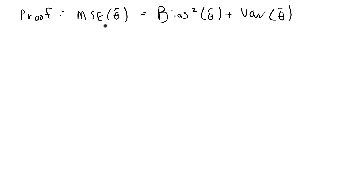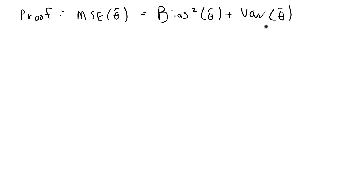The relationship is that the mean square error of an estimator — in this case our estimator is going to be theta hat — is equal to the bias squared plus the variance. I want to prove this using the expectation definitions or equations for MSE, bias, and variance.